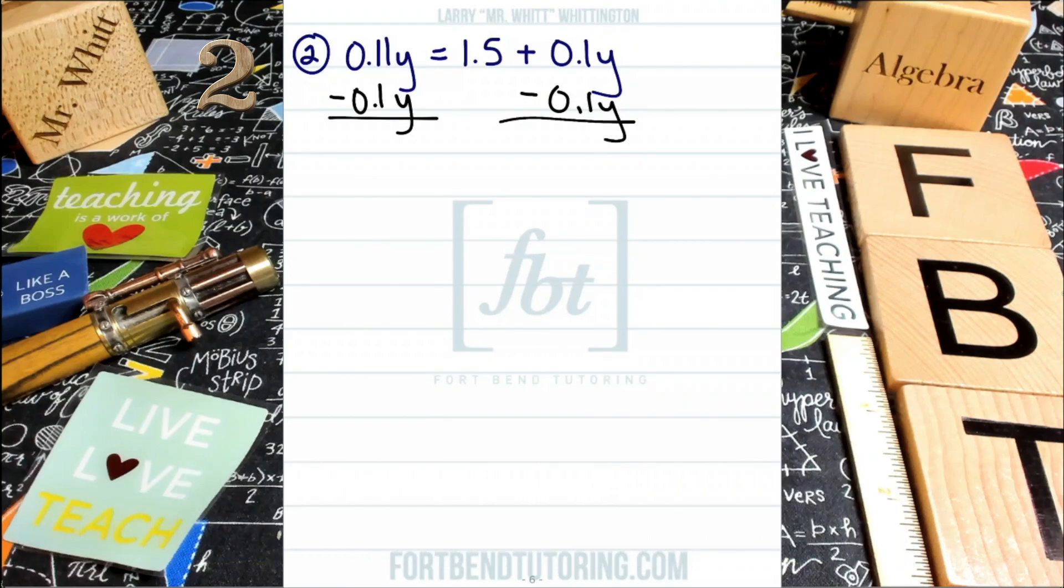On the left side, 11 hundredths minus one tenth, or you can look at it as 10 hundredths. That's the same value, by the way. You'll end up with you'll end up with 0.01Y and you can put a zero in front if you like. Then this will equal to 1.5 as the additive inverses cancel out on the right. Now, if you're like me, you don't like the way this looks. So I think we can write it better. Yeah. Yeah. Okay. That's a little better, right? It's a little clearer.